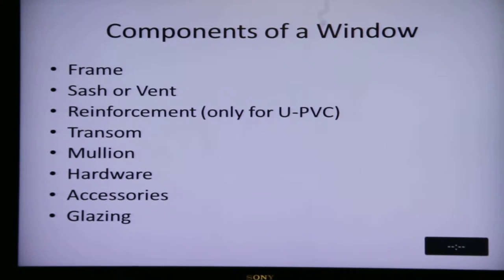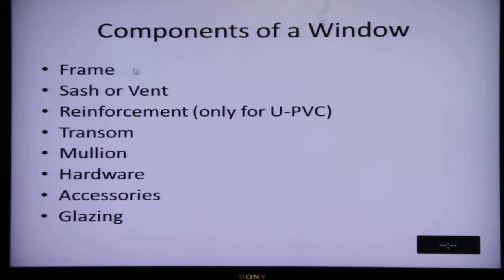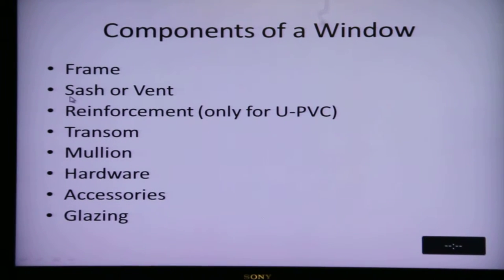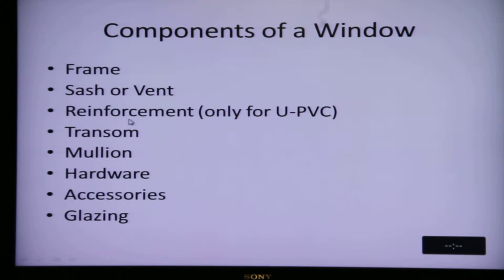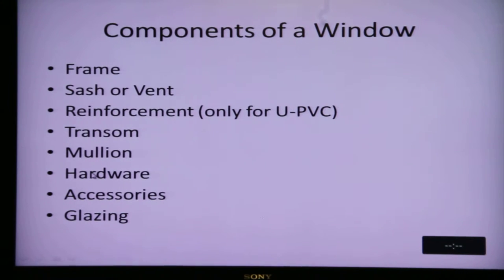Let's now take a look at the various components of a window. The frame is the outer part of the window. The part that opens either on hinges or slides back and forth is the sash or the vent. UPVC windows also have steel reinforcement inside, so that's a component of a UPVC window. Transoms and mullions: a transom is a horizontal member inside a window and a mullion is a vertical member. Then we have hardware like the handles.